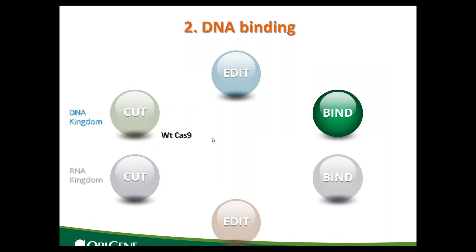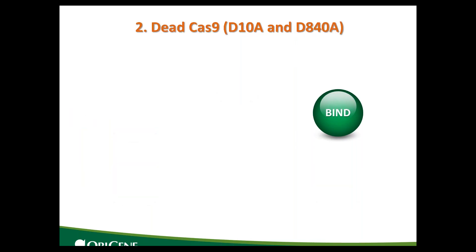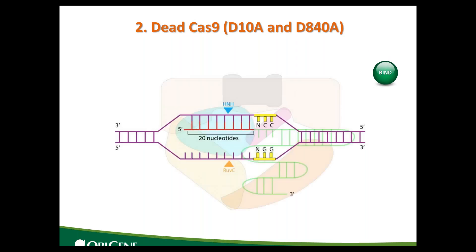Next, we will go to DNA bind, which relies on dead Cas9. So what is dead Cas9? Let's look at the structure of Cas9. Cas9 activity comes from two enzymes: one is HNH, which cuts the binding strand, and another is RuvC, which cuts the loop strand. If we introduce mutations to abolish both enzymes, Cas9 will lose its ability to cut DNA. But instead, it will grasp DNA very tightly. By using this property, we can use Cas9 as a loading dock for different functions.